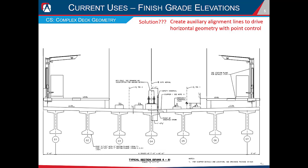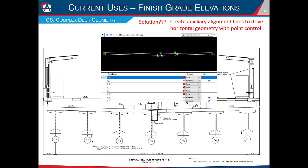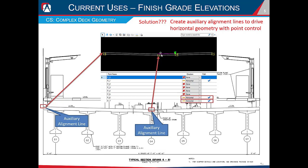The solution is to create auxiliary alignment lines to drive the horizontal geometry with point control in OBM. In the point control dialog, we can control any point of the deck template with an auxiliary alignment line. In this example, the left coping line is controlled by point six — the top left point in the cut section of the deck. The inverted crown point is controlled by point seven, and the right coping line is controlled by point one.